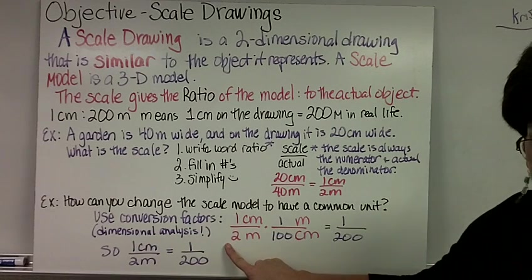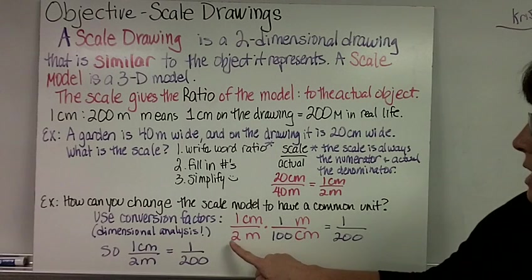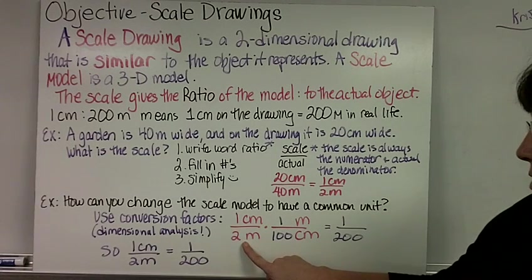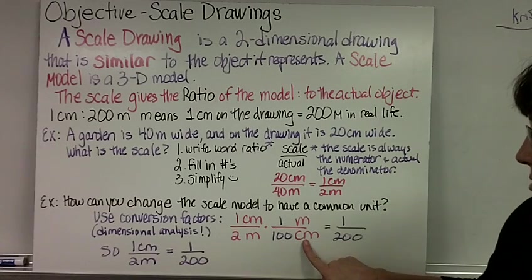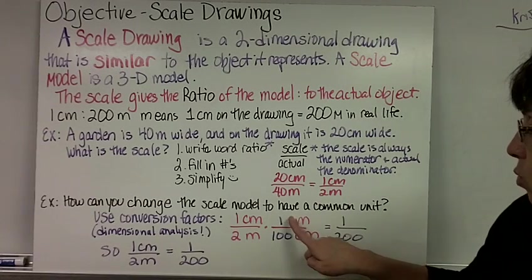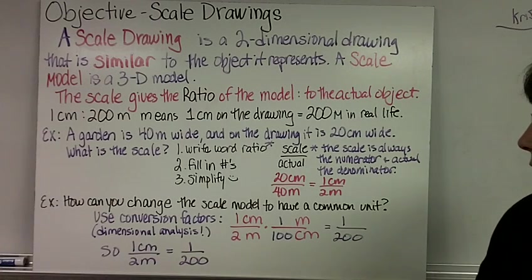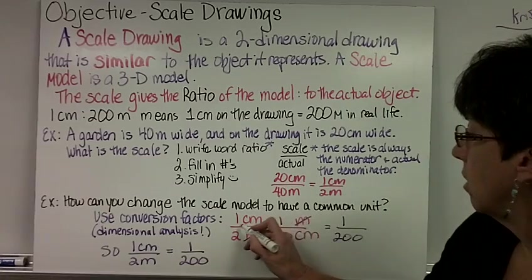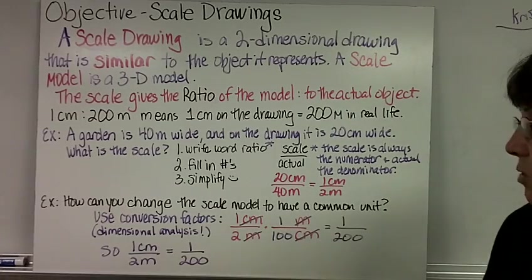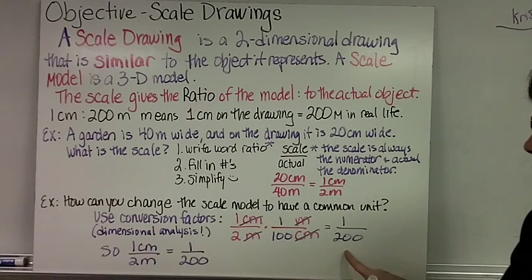So 1 centimeter to 2 meters—I always change to the smaller unit. So I need to change 2 meters to centimeters. I write my meters over centimeters and then the conversion: 1 meter is 100 centimeters. Then I can cross out anything that cancels, and I end up with 1 to 200.